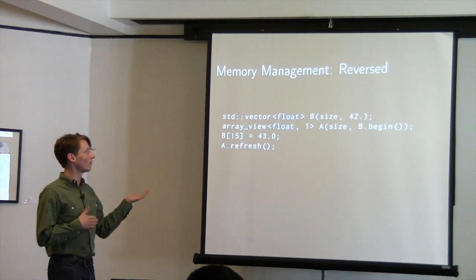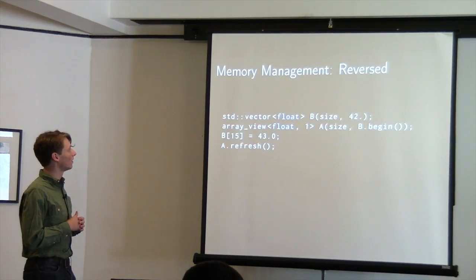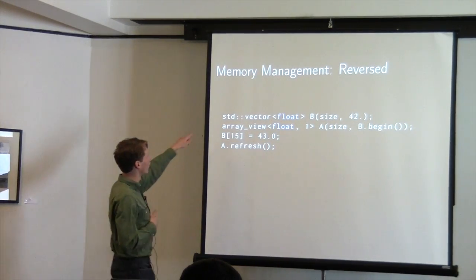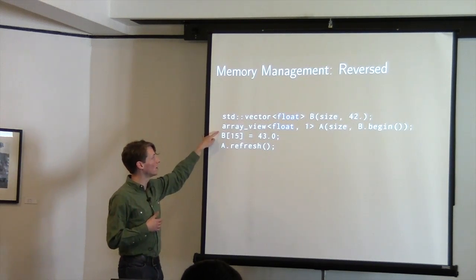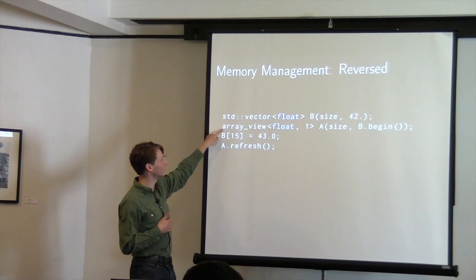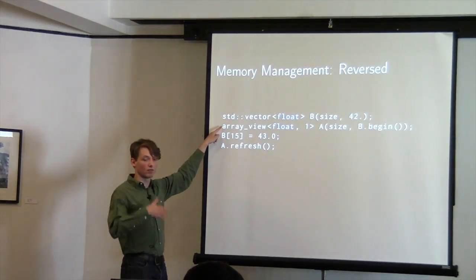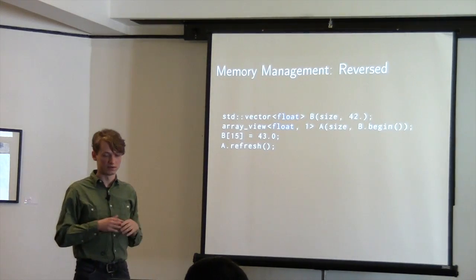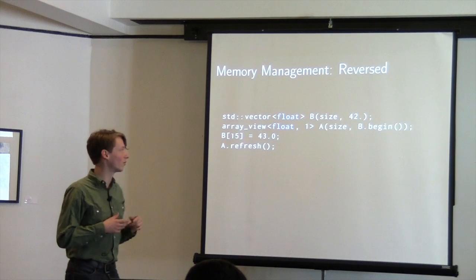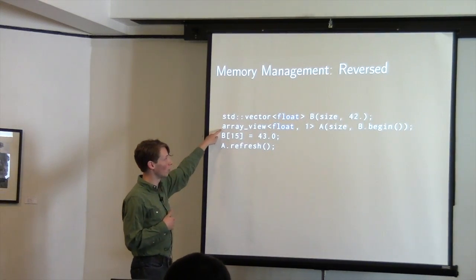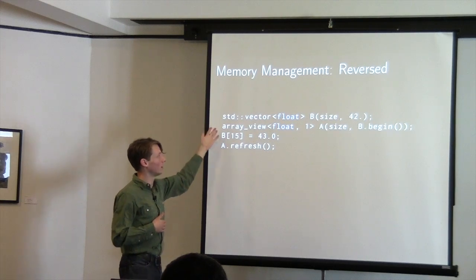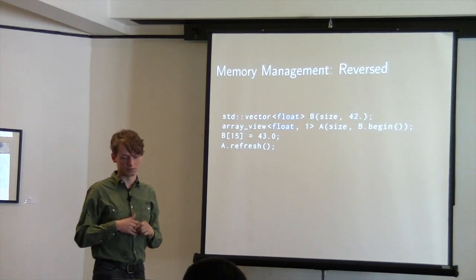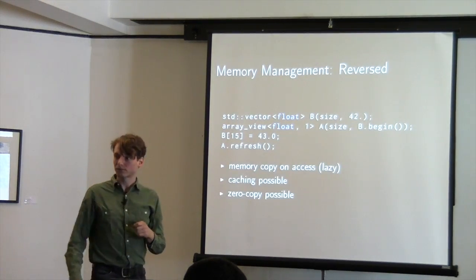There's also a reversed memory management approach from C++ AMP: you have a vector on the host and create an array_view that allows accessing that host data on the accelerator. When the copy happens is somewhat unclear — the data must be present on the accelerator as soon as a kernel accesses it, so it's copied lazily when the kernel runs.